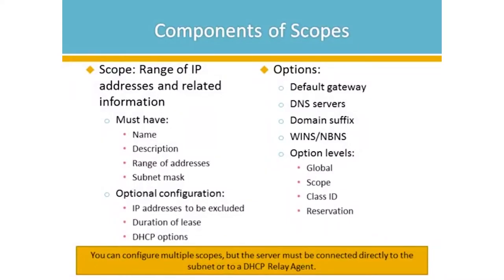Within DHCP, we have something called a scope. A scope is essentially a range of IP addresses and any related information. The required information includes an IP address and subnet mask at minimum — you wouldn't give out an IP address without a subnet mask. We can also include a default gateway or DNS servers. Without a default gateway, clients can still communicate on the network but just can't get out of their own subnet.